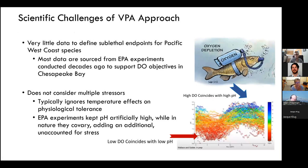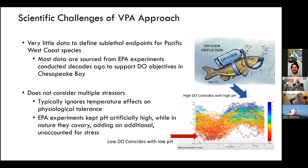There are a lot of scientific challenges with this approach. First, there's very little data to define sublethal endpoints for Pacific West Coast species. The whole VPA approach came out of the Atlantic, particularly Chesapeake Bay. The EPA experiments conducted decades ago to support dissolved oxygen criteria are really tuned for those Atlantic species and not for our West Coast species. This approach also does not consider multiple stressors, and the experiments ignored temperature effects on physiological tolerance and kept pH artificially high, while in nature, oxygen and pH co-vary.